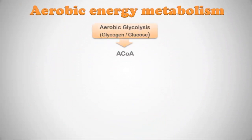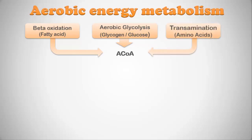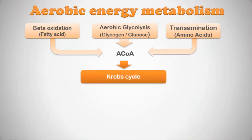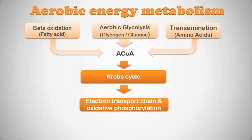Aerobic glycolysis gives us acetyl coenzyme A, but that's not the end. We can also get acetyl coenzyme A from breaking down fat (beta-oxidation) or from breaking down amino acids (transamination). Our body prefers to get it primarily from beta-oxidation, but aerobic glycolysis from glucose is also a good source. Once we have acetyl coenzyme A, we can start creating a lot of ATP through the Krebs cycle, electron transport chain, and oxidative phosphorylation.